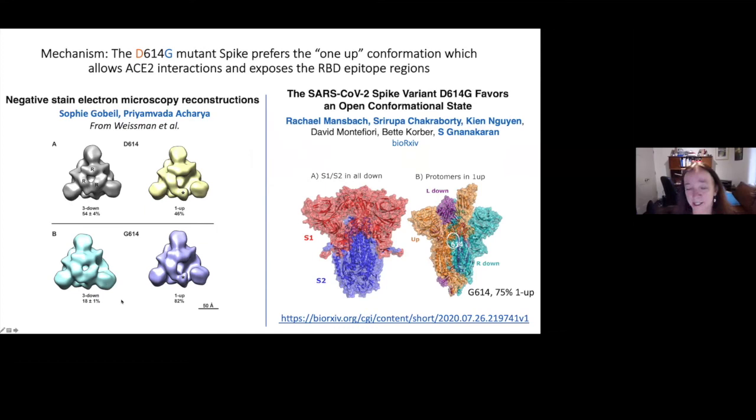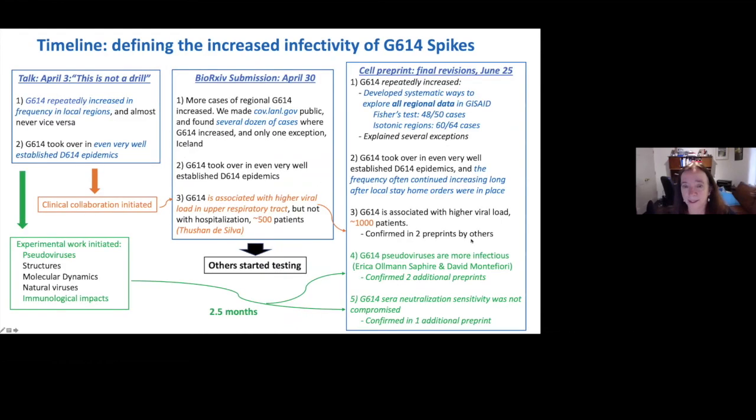We think we understand why. And the reason is because the one up conformation is preferred with the G mutation. It stabilizes the one up conformation. So Priyamvada Acharya at Duke has done some structural studies and it's gone from 46% up in the D614 to 82% up with the mutant in hers. And this exposes both the neutralizing antibody site and the receptor binding site. And at Los Alamos, we've been doing molecular dynamic simulations in Gnana Gnanakaran's lab. And he sees the same kind of thing where G614 would be 75% up, and this is stabilized conformation. So we think that's the effect.